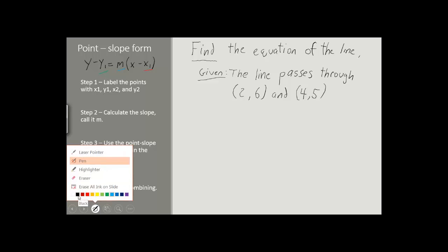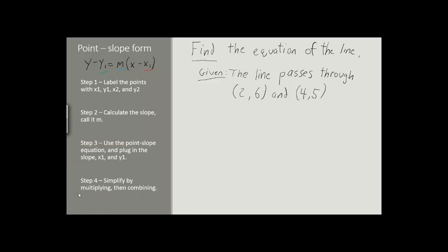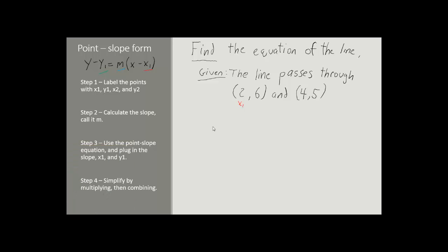The first thing we're going to do is label the points we were given — (2, 6) and (4, 5) — with x1, y1, x2, and y2. The first point will be labeled with x1 and y1. We'll label the x-coordinate, which is 2, in red — that's x1. And we'll label the y-coordinate, which is 6, in green. There are our x1 and y1.